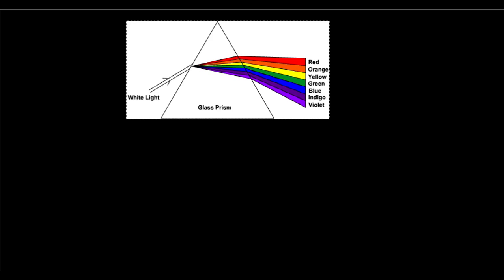We're going to look at refraction by a glass prism. The next concept we're going to look at is dispersion of white light — dispersion by a glass prism.